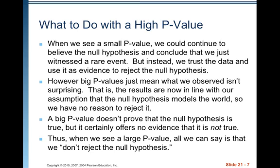When we see a small p-value, we could continue to believe the null hypothesis and conclude we just witnessed a rare event. But instead, we trust the data and use it as evidence to reject the null hypothesis. However, big p-values just mean what we observed isn't surprising — the results are in line with our assumption that the null hypothesis models the world, so we have no reason to reject it. A big p-value doesn't prove that the null hypothesis is true, but it offers no evidence that it's not true. When we see a large p-value, all we can say is that we don't reject the null hypothesis. The data are consistent with what the null hypothesis states.